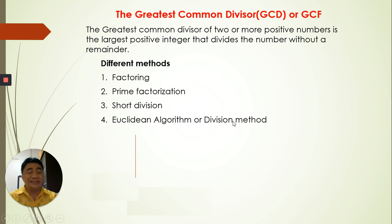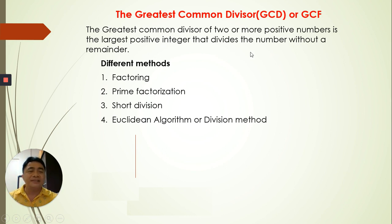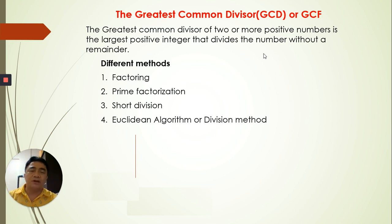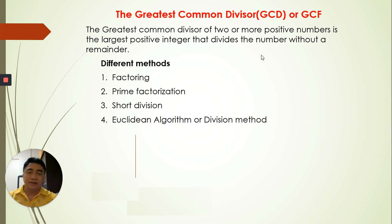What is the greatest common divisor, GCD, or the greatest common factor, GCF? These are two or more positive numbers, and we're going to get the largest positive integer that divides the numbers without remainder. Meaning we get the greatest positive integer that can divide these numbers. So if you have two numbers, we choose the number factor of those numbers that can divide both of them — the greatest positive integer.